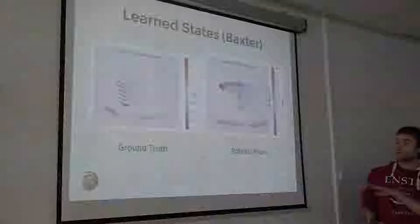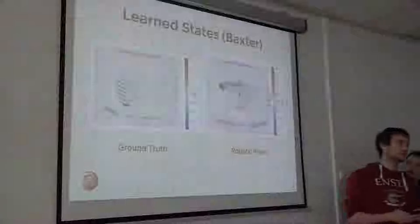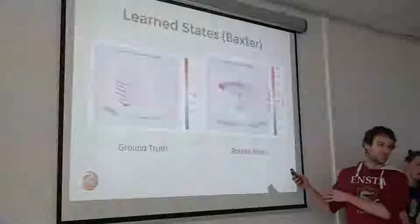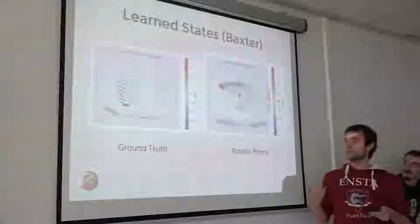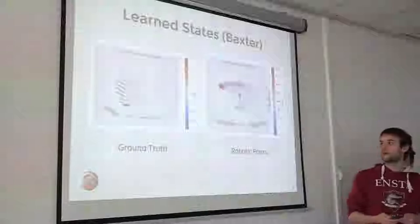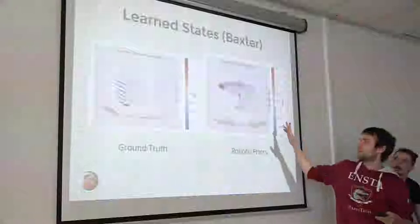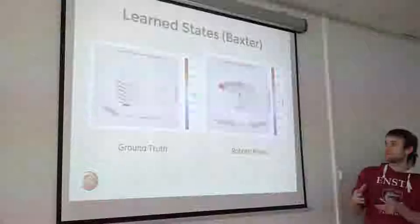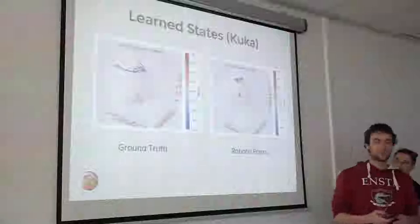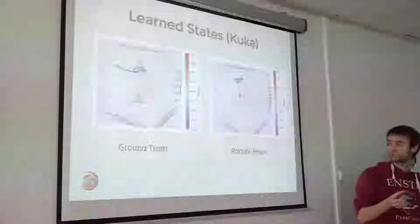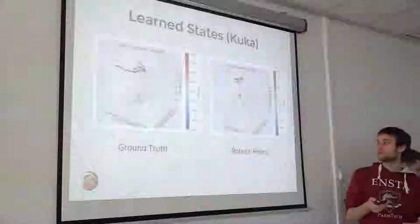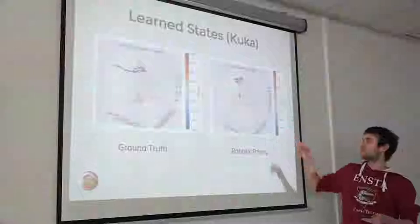Here are the learned states for the Baxter environment. On the left is what we call the ground truth — the XYZ position of the arm. On the right are the learned states using robotic priors. The color denotes the reward: red dots are positive, blue dots mean negative reward (outside a safety box around the robot), and gray is no reward. As you can see, the robotic priors more or less capture the structure of the environment, putting all positive rewards together. The same holds for the KUKA environment, where it appears much smoother because the delta in the action space is smaller.